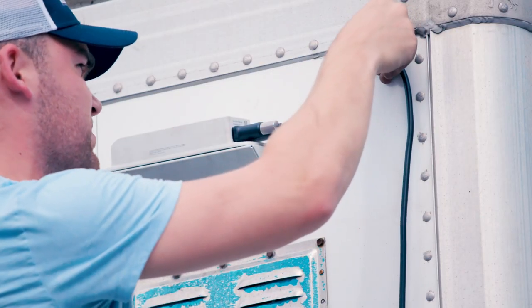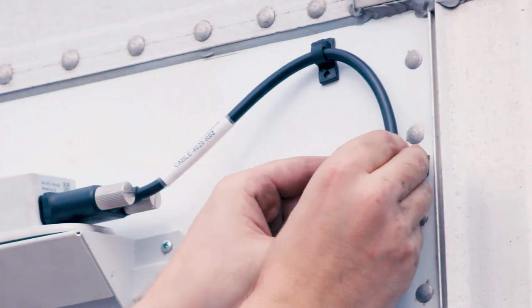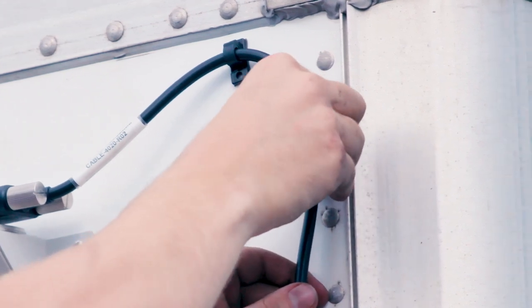Next, use the included cable clips to affix the cable to the front bulkhead of the trailer, being sure to use an alcohol wipe to clean the surface before sticking the clip to the trailer.